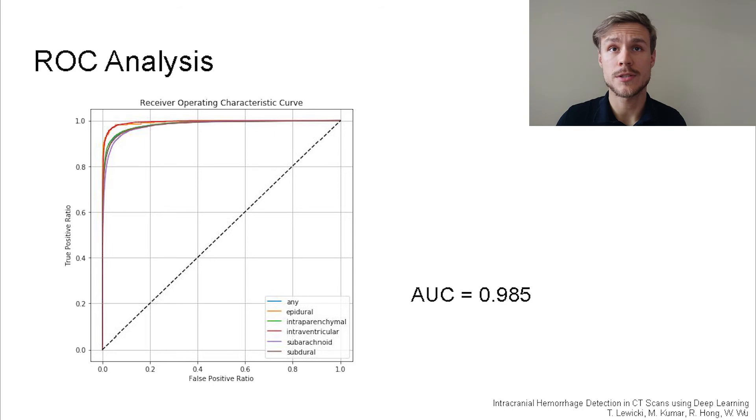As the last measure of performance, we carry out receiver operating characteristic analysis. The resulting curve is presented on the slide, and the area under curve is 0.985.